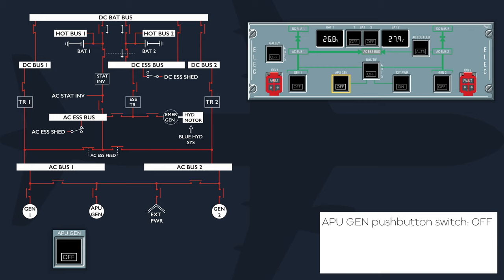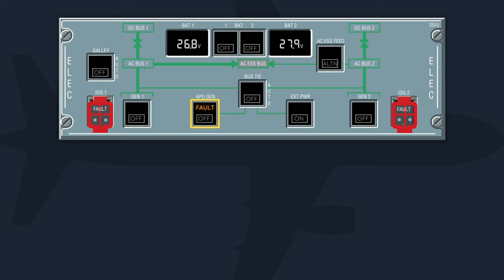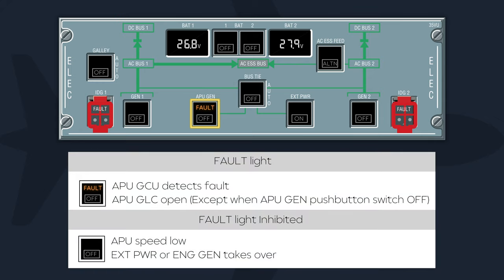Selecting the APU generator push button switch off will de-energize the generator and open the generator line contactor. The fault circuit is reset any time the push button is selected off. The APU generator push button switch will indicate fault when the APU GCU detects a fault, or if the APU generator line contactor opens, except when the push button is selected off. The APU fault light is inhibited whenever APU speed is low, or if the generator line contactor opens when a higher-priority source is connected, such as external power or an engine-driven generator.